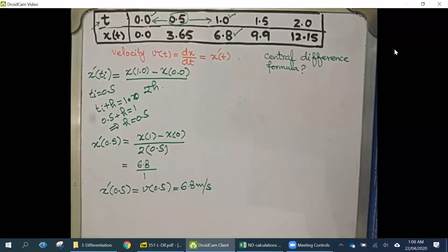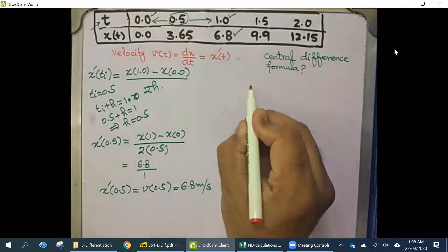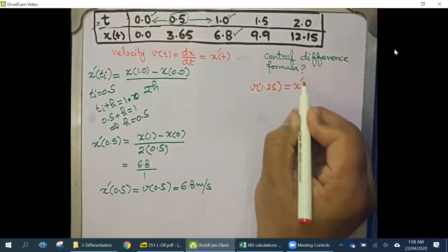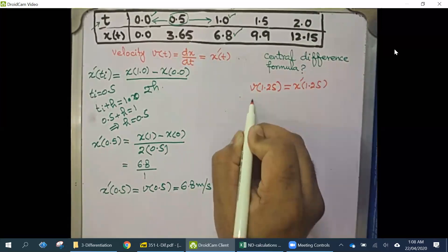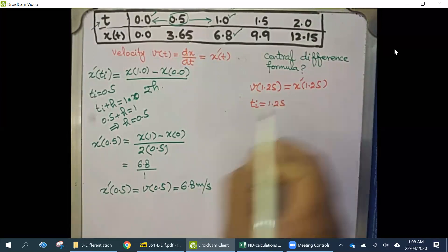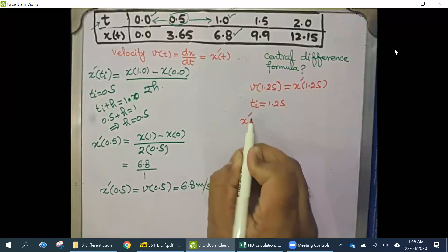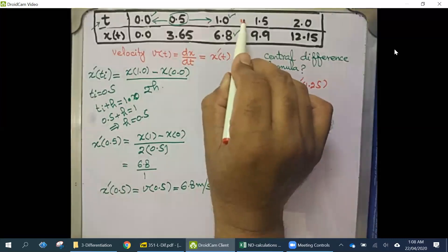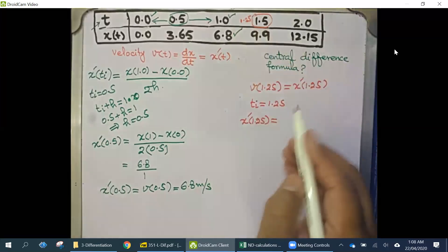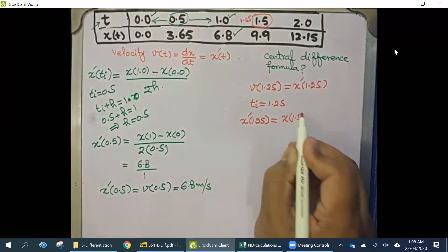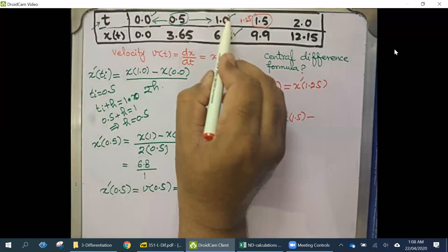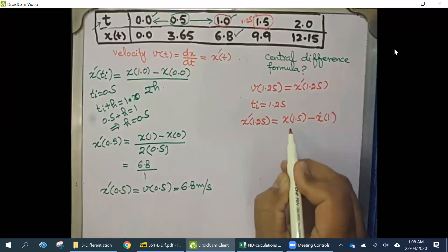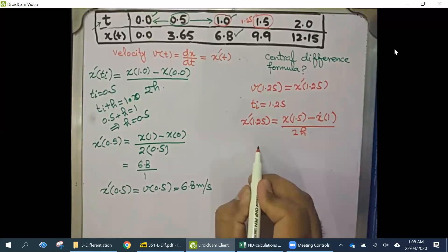Next we want to calculate the velocity at t = 1.25 seconds. So we need to calculate x'(1.25). Our t_i = 1.25, and according to the central difference formula we must use a future value and a previous value. The future value here corresponds to t = 1.5, giving x(1.5) minus x(1) divided by 2h.